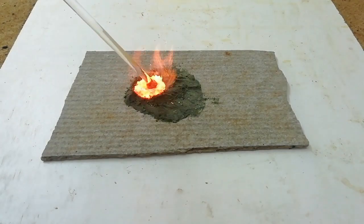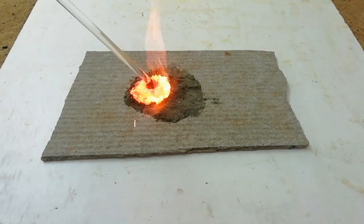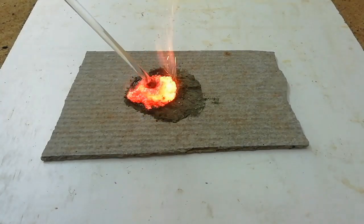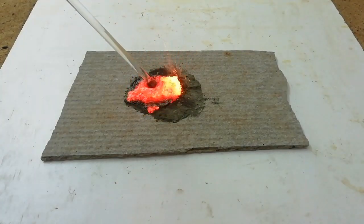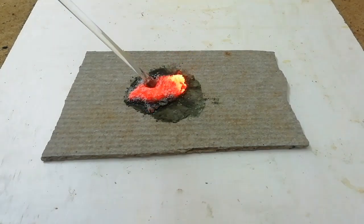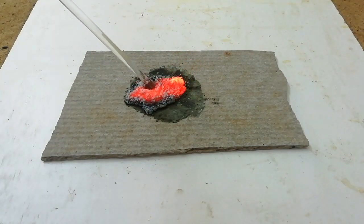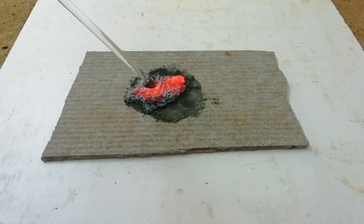To start the reaction, a preheated glass rod was placed in the middle of the mixture. That gives the heat to start the reaction. After a few minutes, you can see the iron starts to burn.